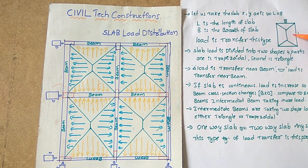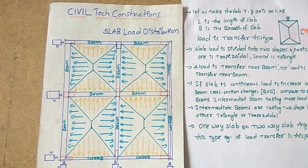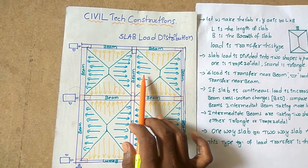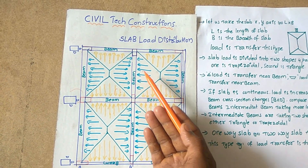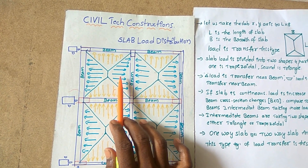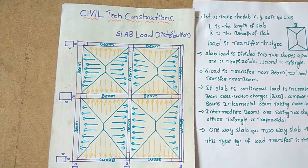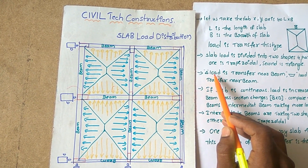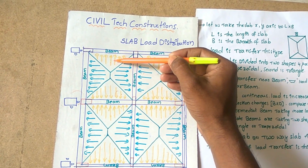This trapezoidal load is transferred to this beam, as shown in the picture. The slab load — trapezoidal load — is transferred to this beam, and this trapezoidal load is transferred to this other beam. This is the intermediate beam. The triangle load is transferred to the beam near it.